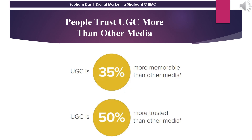People trust user-generated content more than any other form of media. The statistics say 35% of user-generated content is more memorable than any other form of media, and 50% of user-generated content is more trusted than any other form of media. So why advertise when UGC achieves 35% and 50% memorability and trust?